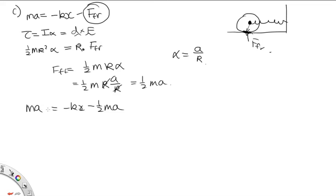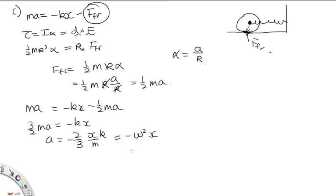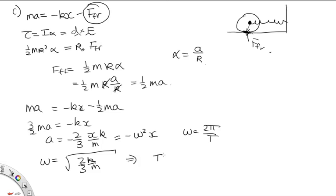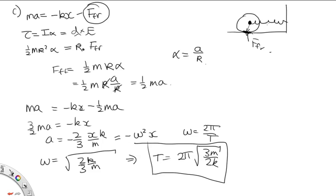Solving for A: three-halves mA = −kx, so A = −(2k/3m)x. For simple harmonic motion, A = −ω²x, giving ω = √(2k/3m). Since ω = 2π/T, the period is T = 2π√(3m/2k). That is the period for this simple harmonic motion.